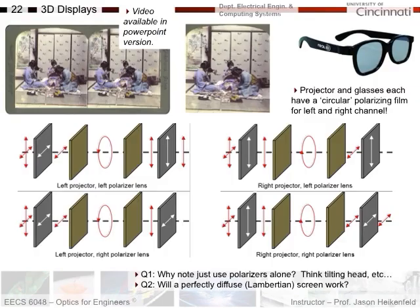The last topic is 3D displays. In the PowerPoint version, you can see how two separate images taken at different angles form a 3D image via an animation. In many 3D movies, there's a projector and glasses that have a circular polarizing film — different for the left and right lenses. Two images are built up from different angles, and oscillated back and forth quickly enough that you perceive a 3D image.